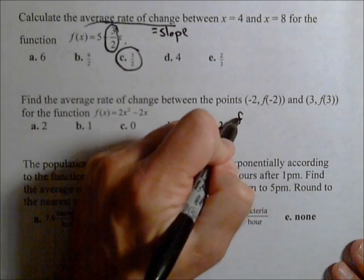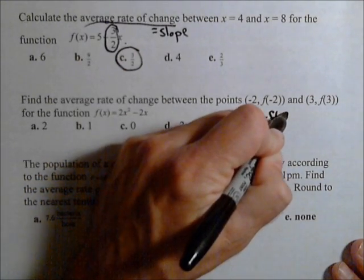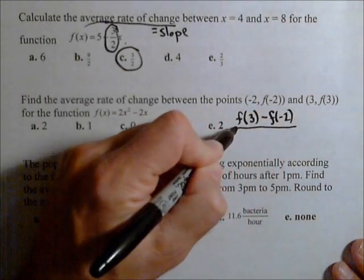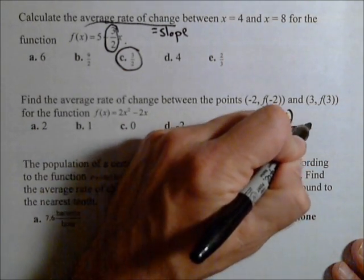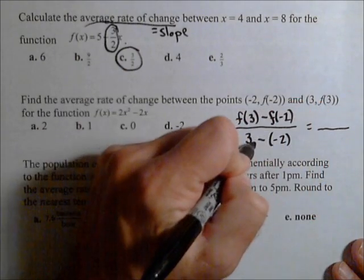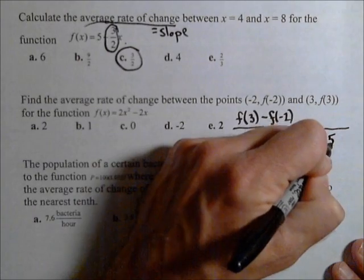So our average rate of change is our change in output, f(3) - f(-2), over change in input, 3 - (-2). So our change in input is going to be 3 + 2, because we have minus a negative, so over 5.